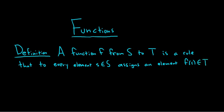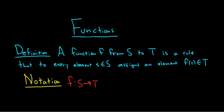The notation that we will use for functions is: f from S to T. S is called the domain of the function and T is called the codomain of the function.